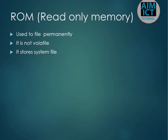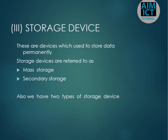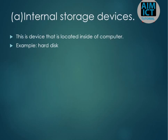ROM stands for Read Only Memory. It is used to store permanent data and is not volatile — opposite of RAM. That covers the processor topic for your level. Storage devices are devices used to store data, such as flash disks and memory cards. Some storage devices are located internally, such as the hard disk, which is an internal storage device.